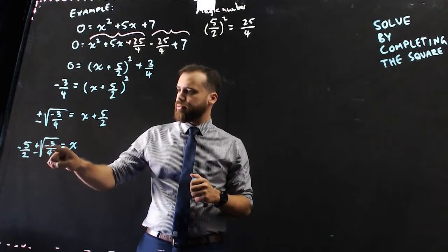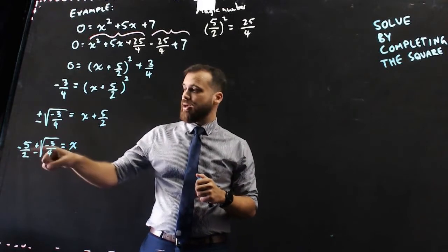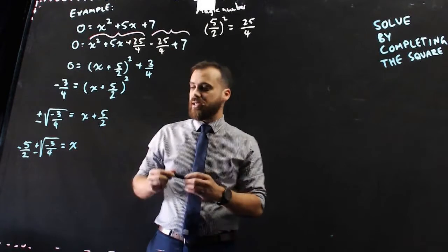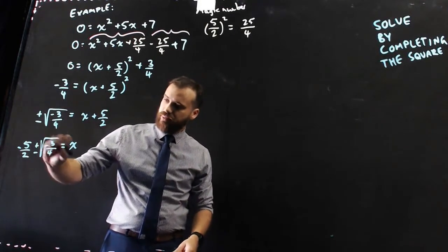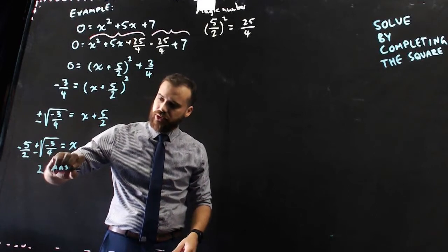I'd type negative 5 over 2 plus the square root into my calculator, and then I'd type in negative 5 over 2 minus the square root. When I type in the plus and the minus, I'm going to get two answers. But, you guys are used to that. You've gotten two answers in the past before, so that's not going to freak you out.